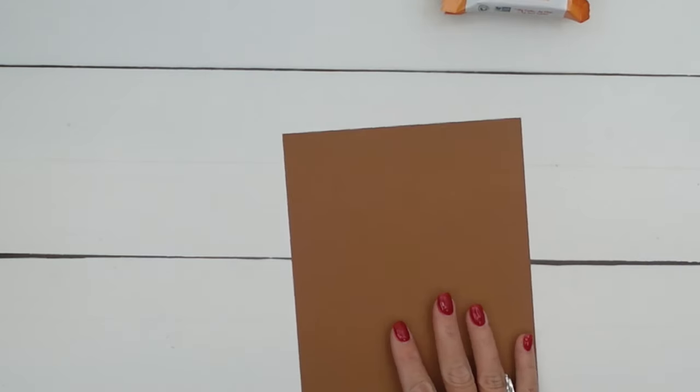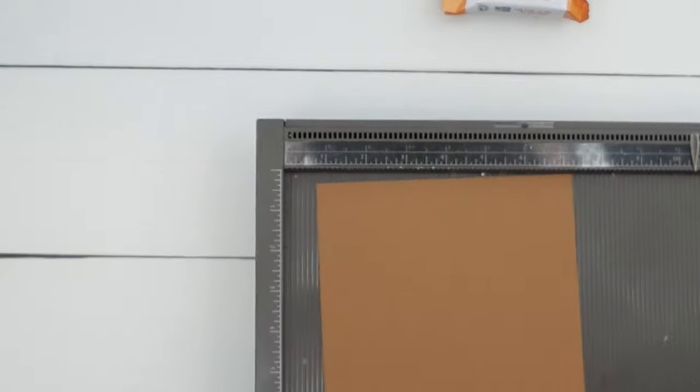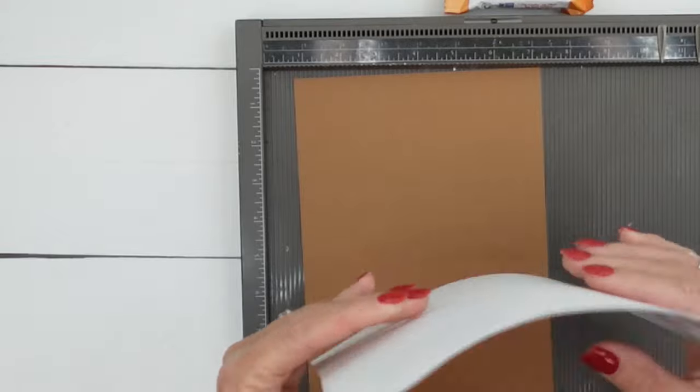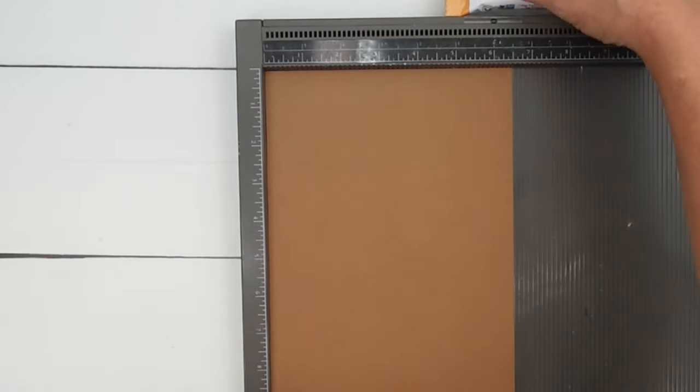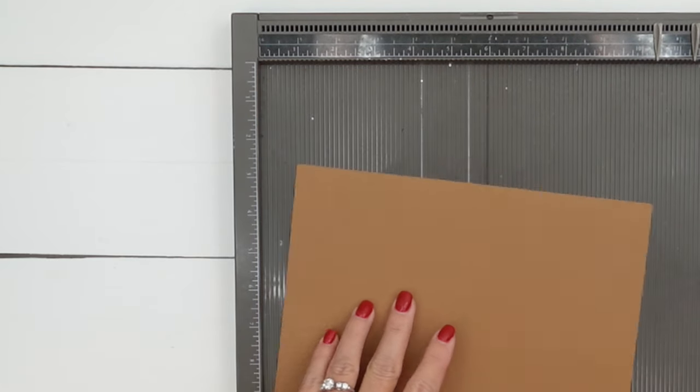You're going to need a piece of pecan pie cardstock that measures six and a half by nine and a half. Now there is a PDF on my blog that looks like this. It's got the measurements for you. So if you're watching on YouTube, just hop over there and grab it. Let's start with the long side.